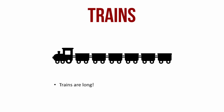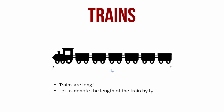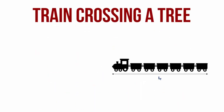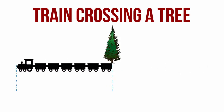Let us assume that this train has a length of LT. Our first case is a train of length LT crossing a stationary object. That stationary object here is a tree. It could also be a lamppost, a person standing, or something stationary like a house. For a train to cross a stationary point, it shall have to travel a distance equal to its own length.